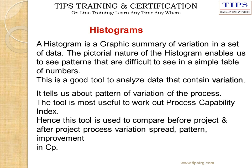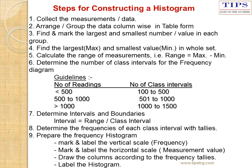The histogram is used to compare before-project and after-project process variation, spread patterns, and improvements. The steps for constructing a histogram are: collect the measurements or data; arrange the data into groups; find the largest and smallest values; calculate the range (maximum minus minimum); determine the intervals and frequencies; determine the boundaries; and determine the frequencies of each class interval with tallies. Then prepare the frequency histogram.